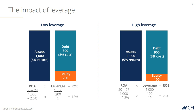When divided by the asset base of 1,000, that results in a return on assets of 2.3%, which is slightly lower than in the low-leverage case. But thanks to the higher degree of leverage, when we multiply that return on assets of 2.3% by 10, it results in a return on equity of 23%, as opposed to the low-leverage company's return on equity of 13%. This is exactly how higher leverage enhances return on equity.